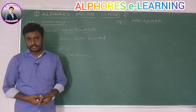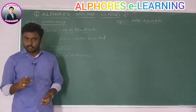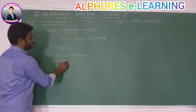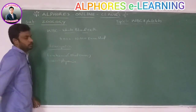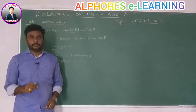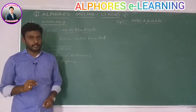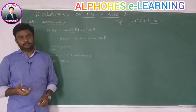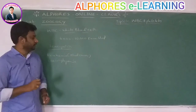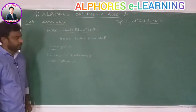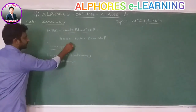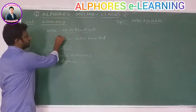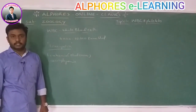Decreasing in the number of WBC is called leukocytopenia. So to summarize: increasing WBC is leukemia (blood cancer), decreasing WBC is leukocytopenia, production of WBC is leukopoiesis, and the number of WBC is 6,000 to 10,000 per cubic mm of blood.